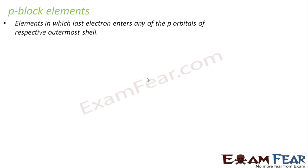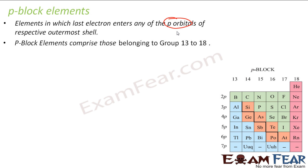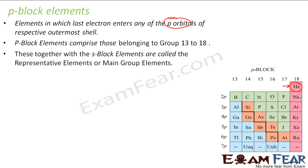Now let us understand the p-block elements. Elements in which the last electron enters p orbitals are called p-block elements. They are group 13 to group 18 elements. Please note that helium is also put in p-block, but in the case of helium, the last electrons go into s orbital — it is an exception. Helium is placed in p-block because its properties are similar to those of the noble gases.